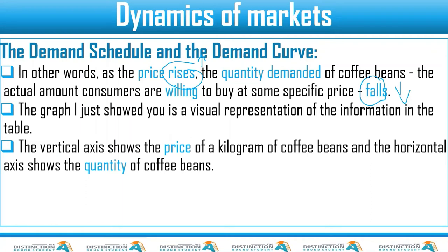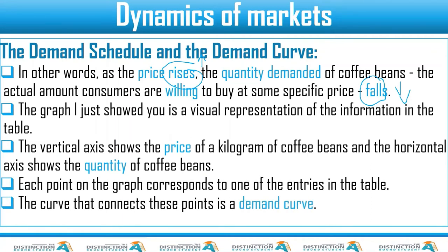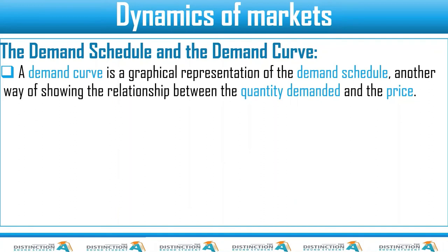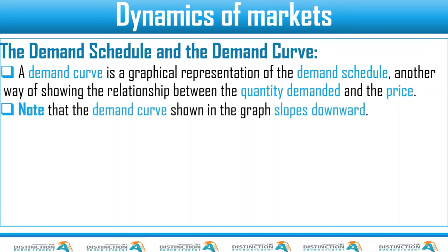The graph I just showed you is a visual representation of the information in the table — the demand schedule. The vertical axis shows the price. The curve that connects the plotted points is the demand curve. A demand curve is a graphical representation of the demand schedule, and it helps us clarify the relationship between quantity demanded and price. In economics, we try to simplify things by using graphs because those graphs make things make a lot of sense.